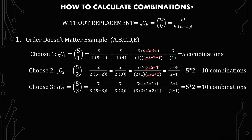So we have 5 choose 3, which equals 5 factorial over 3 factorial times 2 factorial, which equals 5 times 4 times 3 times 2 times 1 over 3 times 2 times 1 times 2 times 1. Just like before, the 3 times 2 times 1 cancels out to give us 5 times 4 over 2 times 1, or 10 combinations.